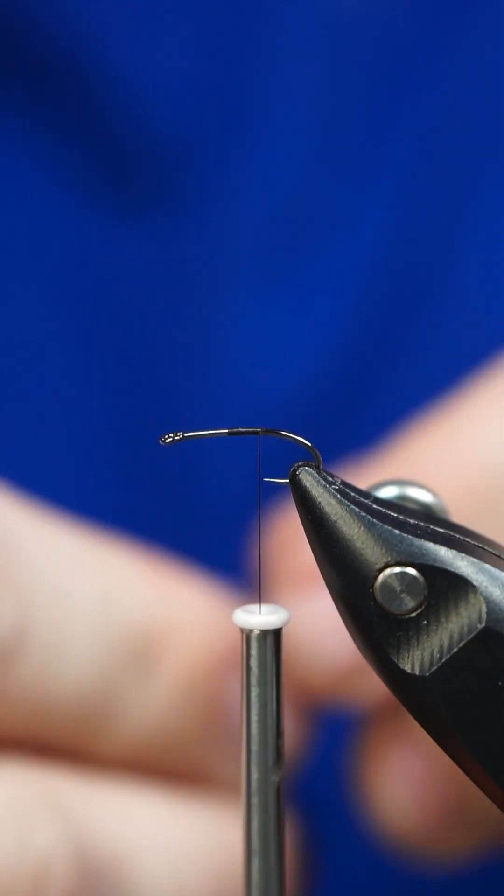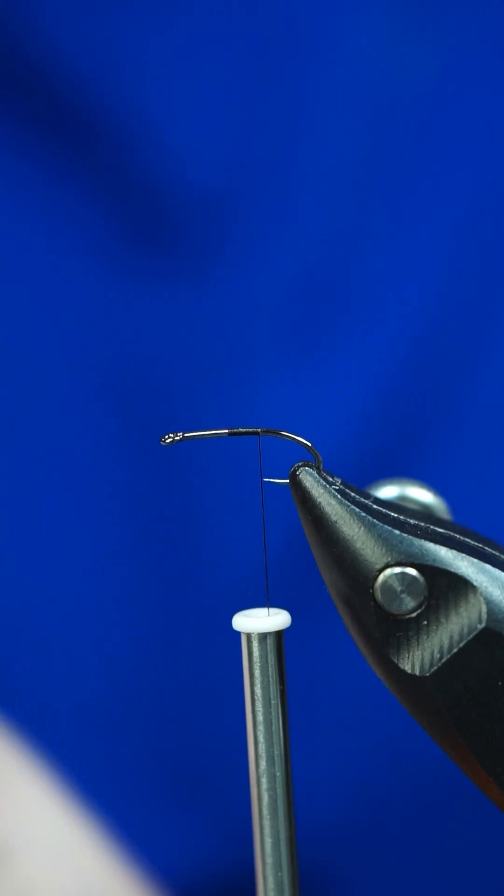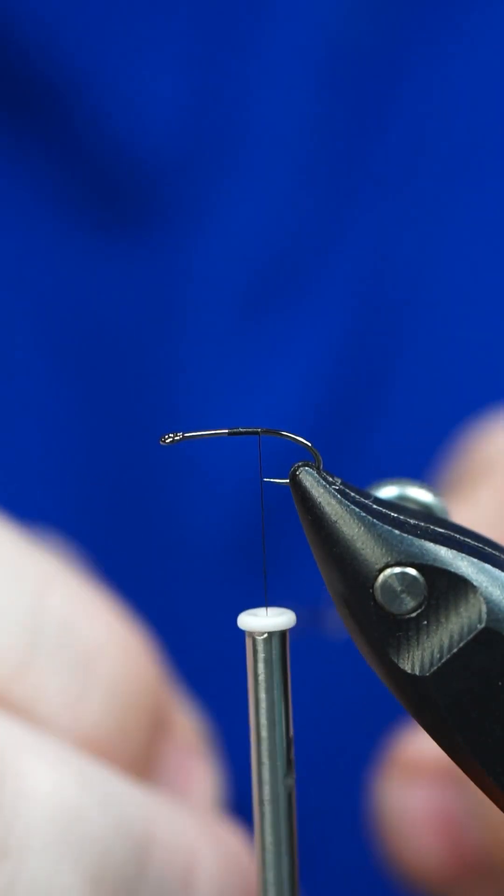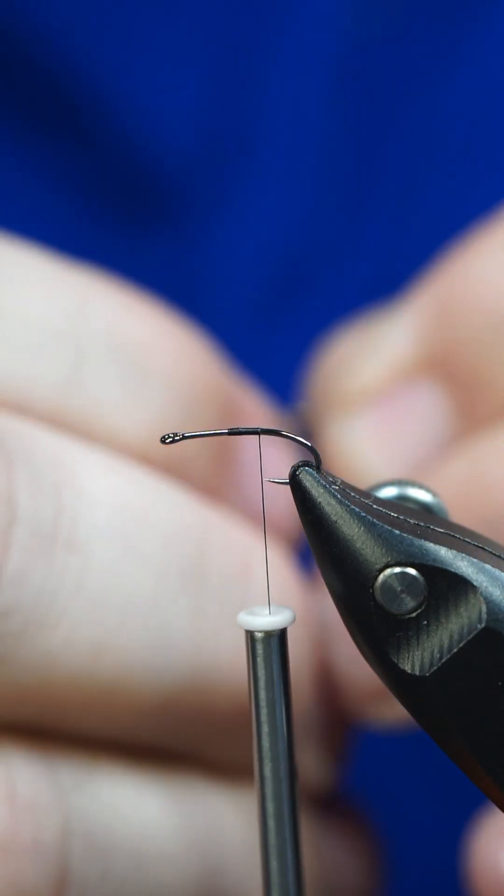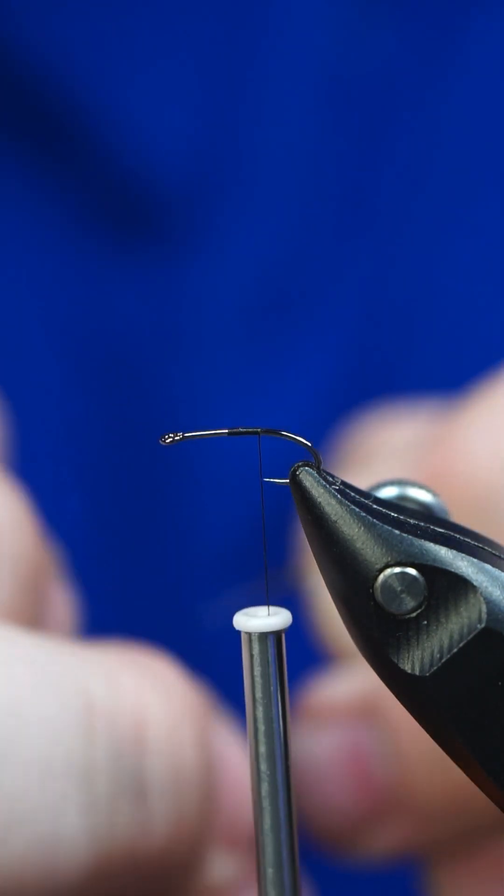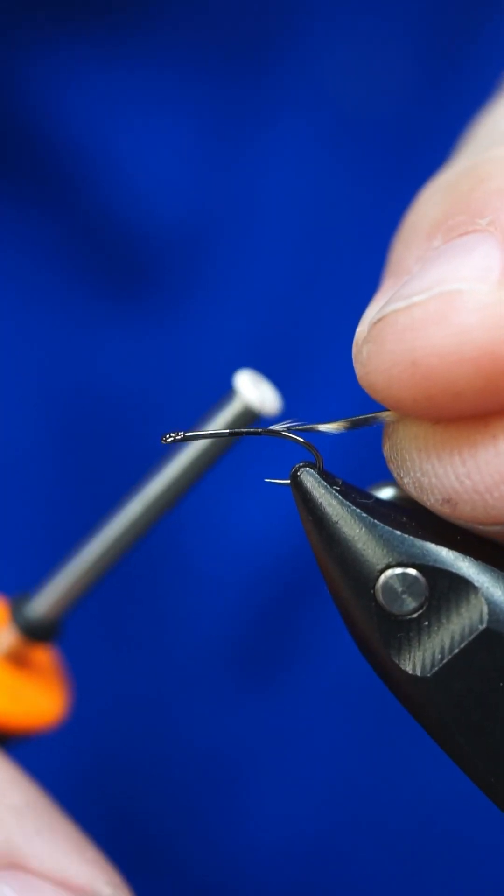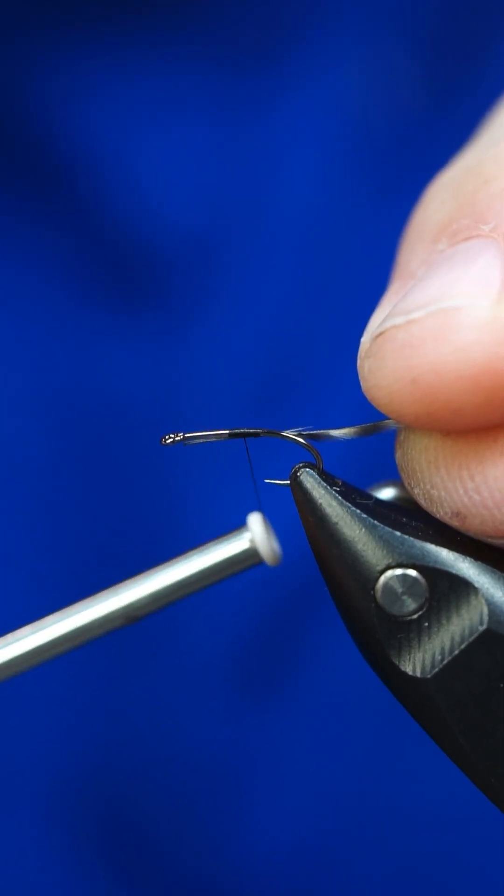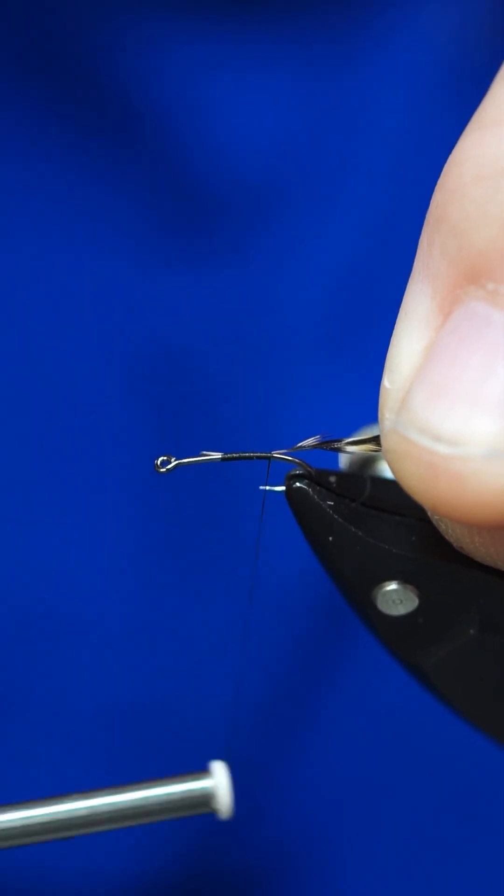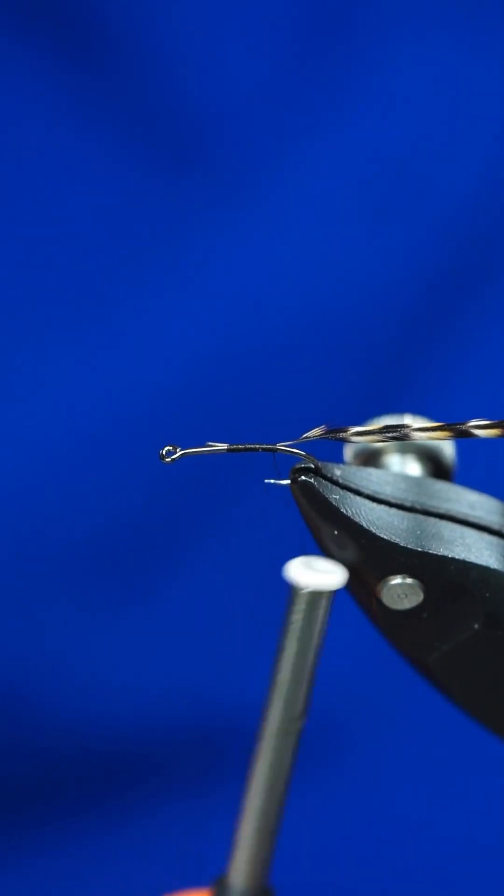For a hackle I have this Cree midge hackle from Whiting Farms and I purchased this Cree from Jim's Flacco. If you guys don't know, Jim's Flacco is the largest Whiting distributor. I'm pretty sure they're the largest in the world and they have the best prices.